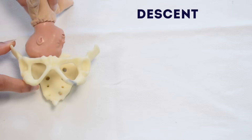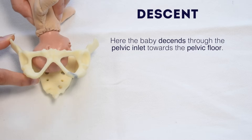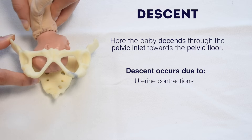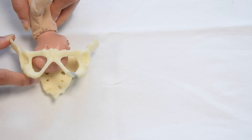Descent. Here the baby descends through the pelvic inlet towards the pelvic floor. Descent occurs because of uterine contraction, pressure of the amniotic fluid, and voluntary contraction of the abdominal muscles by maternal effort.